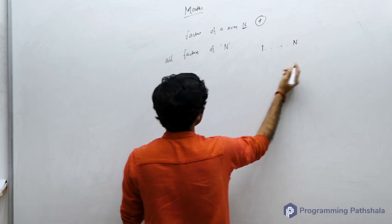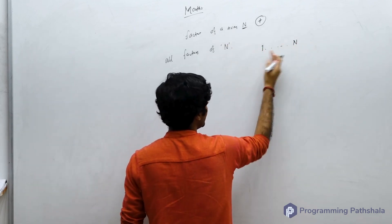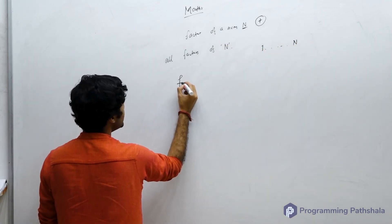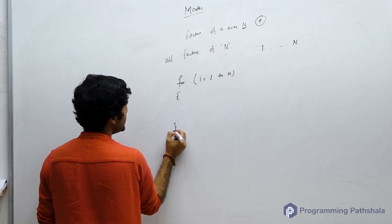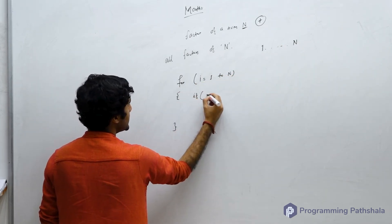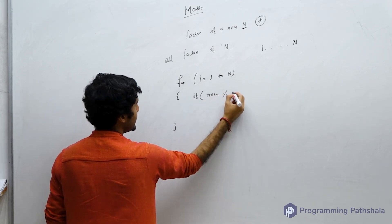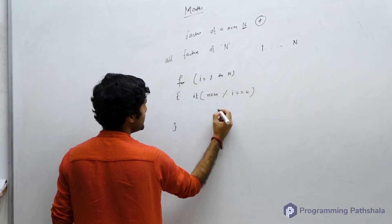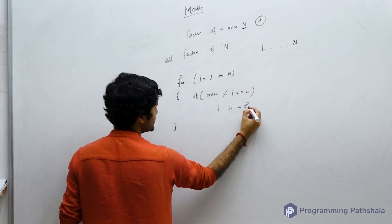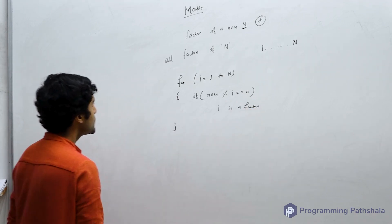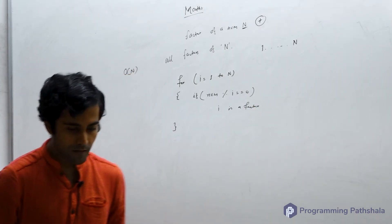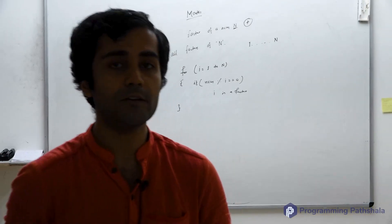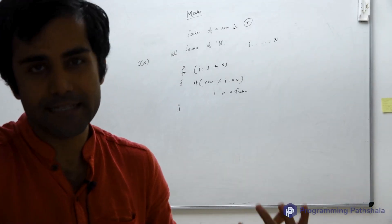The factors of a number will lie between 1 to n. So you can simply write a for loop where i goes from 1 to n and check if the number is perfectly divisible by i — that means i is a factor. The time complexity of this approach is O(n).